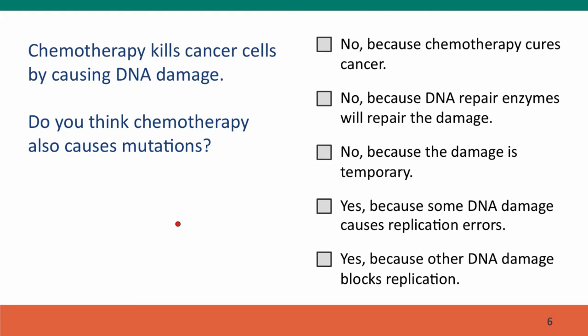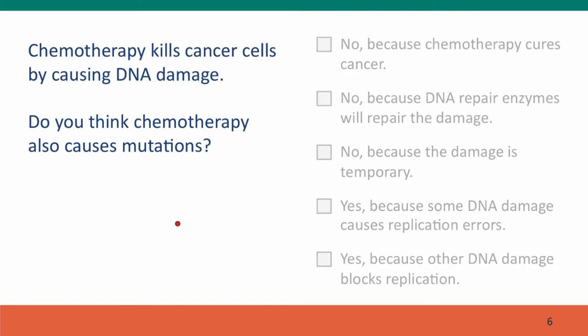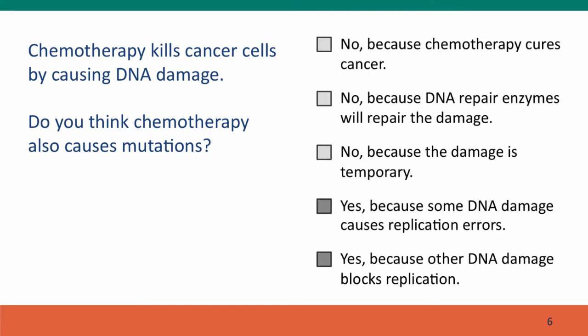Now, here's a question. Chemotherapy, the chemicals that are used for chemotherapy, are basically DNA-damaging agents. And they kill cancer cells because the cancer cells are growing faster than other cells, and so they're more sensitive to DNA damage. Do you think that chemotherapy also causes mutations? Is chemotherapy mutagenic? And the answers are, well, yes, DNA damage caused by chemotherapy will certainly cause mutations, both because some of the DNA damage directly causes replication errors, and because other DNA damage blocks replication entirely, and this will call in the error-prone DNA polymerase, which will make more errors.